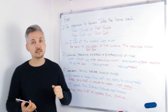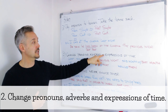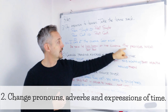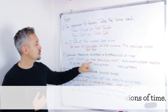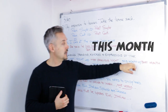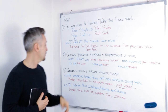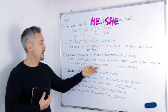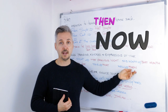Now let's look at the second rule: change pronouns, adverbs, and expressions of time. For example, last night goes to the previous night. This month becomes that month. I becomes he or she. This would go to that. Now would go to then, and so on.